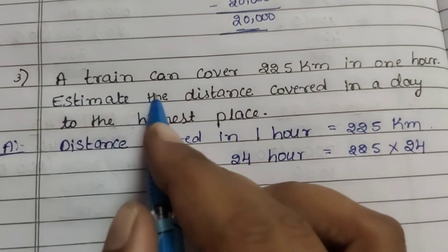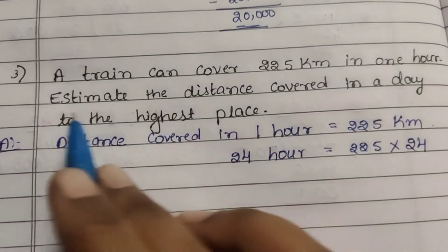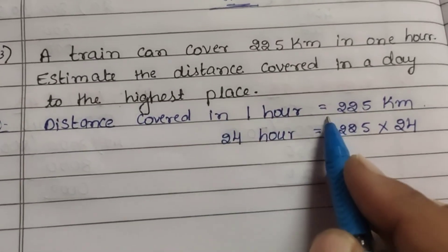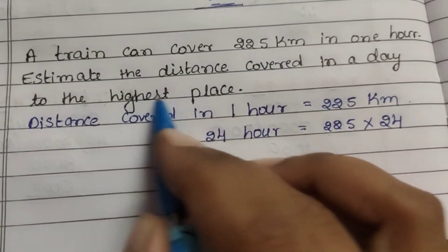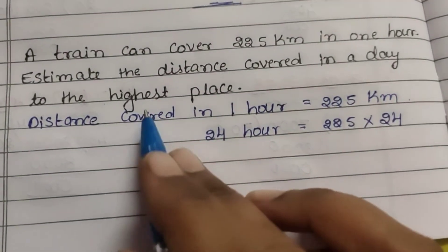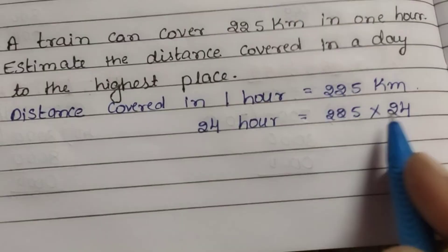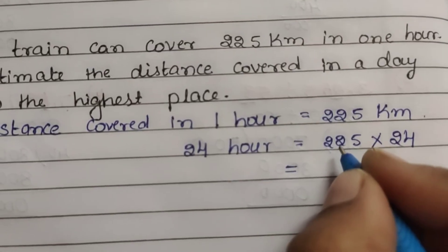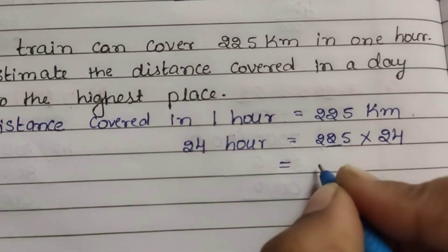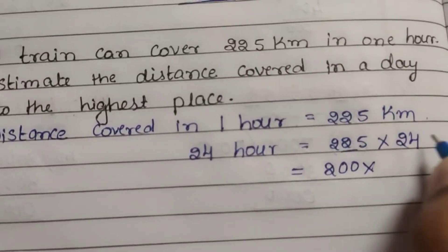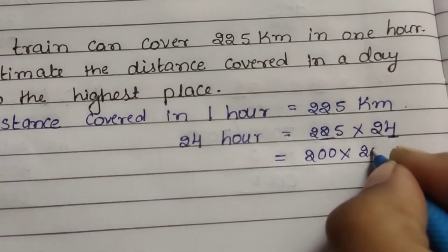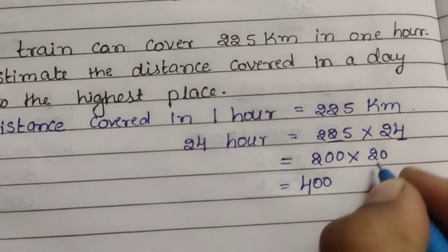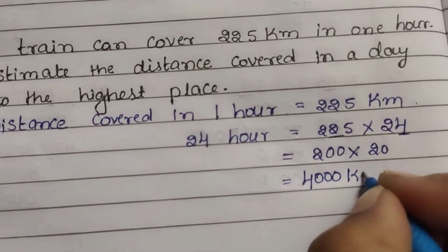Third question: A train can cover 225 km in 1 hour. Estimate the distance covered in a day to the highest place. Distance in 1 hour is 225 km. One day has 24 hours, so distance in 24 hours equals 225 into 24. Estimate 225: digit 2 is less than 5, so 225 rounds to 200. For 24: digit 4 rounds to 20. Multiply: 2 times 2 is 4, giving 4,000 km.